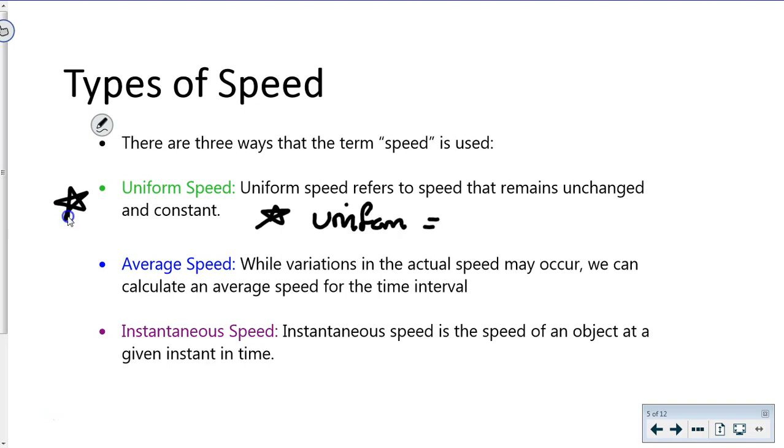Average speed means your speed could go up and down a little, but we consider the average, like when we draw a line of best fit. The data might not be a perfect straight line like uniform speed, but we can find an average.